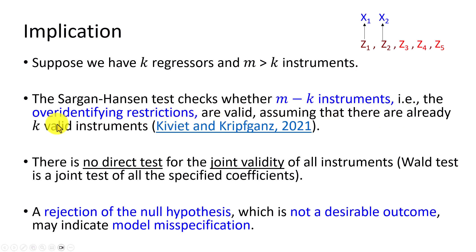Which refer to the over-identifying restrictions in the model are valid, assuming that there are already k valid instruments, assuming that z1 and z2 are already valid. So it's going to be testing z3, z4, and z5. There is no direct test for the joint validity of all instruments. Now you could use the Wald test to test all coefficients. So a rejection of the null hypothesis, which is not a desirable outcome, may indicate some model misspecification.